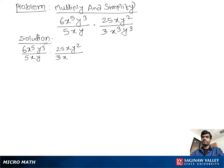Now we multiply the numerators and multiply the denominators, so we can write (6x^5y^3 times 25xy^2) over (5xy times 3x^3y^3). Now we can simplify.